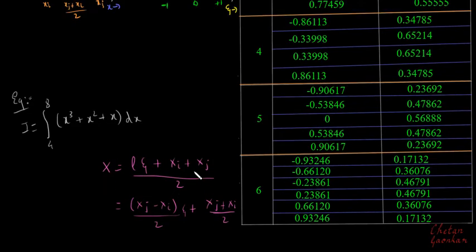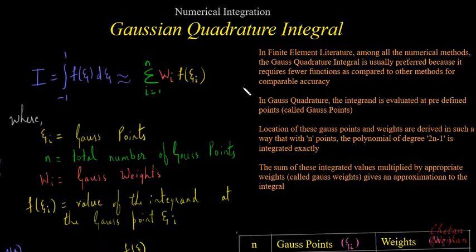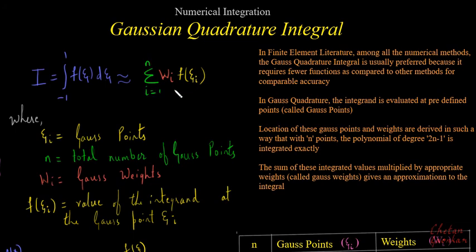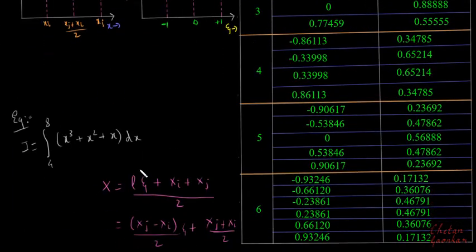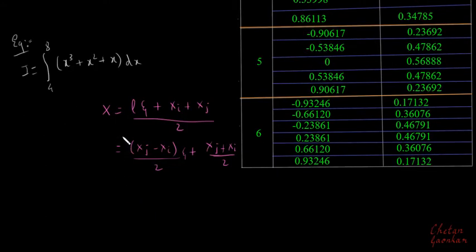The rule is: whenever you see an integral and want to evaluate it using Gauss quadrature, first check its domain. If it is from minus one to plus one, you can directly use the formula. If not, use this coordinate mapping relation to change the domain to minus one to plus one. The moment you apply this mapping, the limits will change from minus one to plus one.